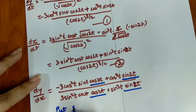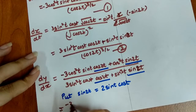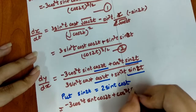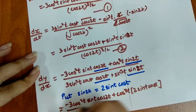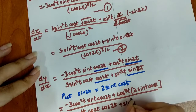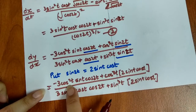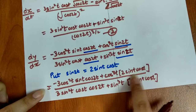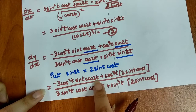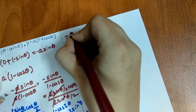Substituting sin 2t = 2 sin t cos t and expanding: numerator becomes −3cos²t sin t cos 2t + cos³t × 2 sin t cos t, denominator becomes 3sin²t cos t cos 2t + sin³t × 2 sin t cos t. Taking common factors cos²t sin t from numerator and sin²t cos t from denominator, then simplifying.